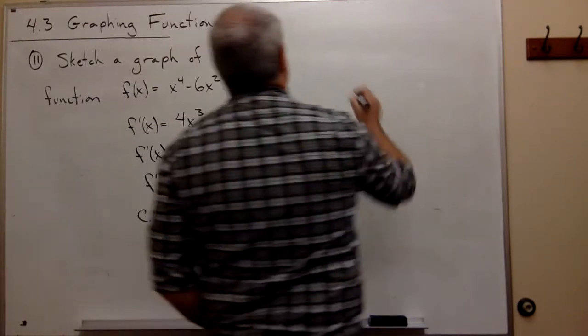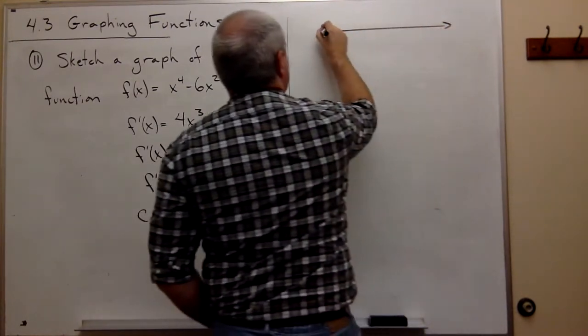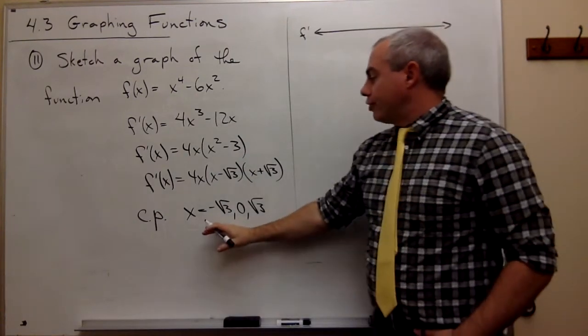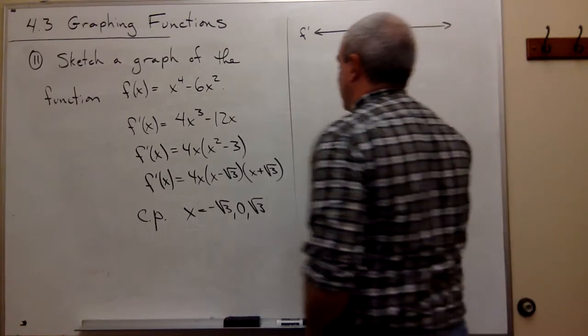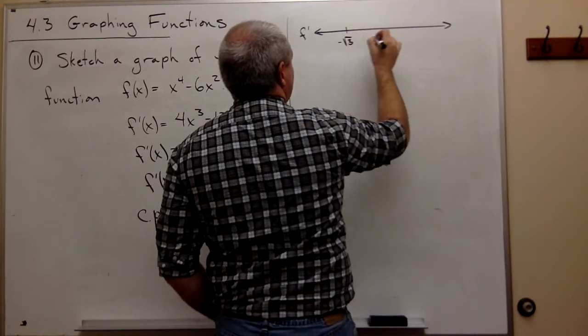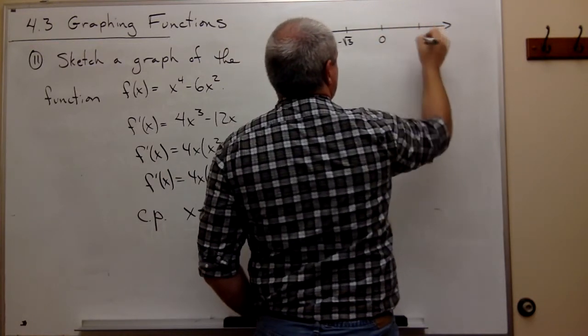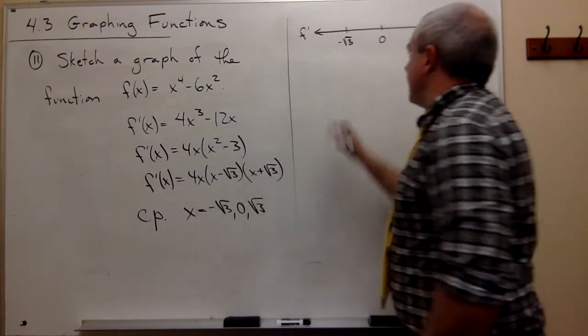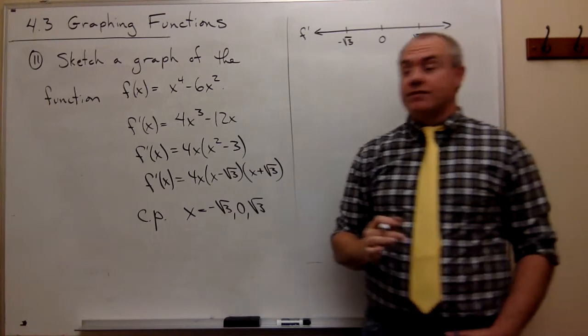Let's make a number line. Let's label this f prime. And we want to put on our critical values onto this number line. Our critical points being minus root 3, 0, and positive root 3. And now let's test some points in here and see if we get positives or negatives.